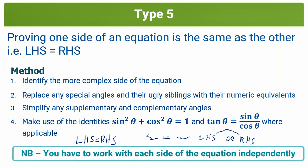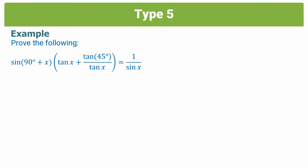To consolidate the method, let's tackle an example. We're asked to prove: sine of (90 plus x) all multiplied by tan x plus tan 45 over tan x equals 1 over sin x. Step one: identify the more complex side — obviously the left-hand side, which is way more complicated than the simple 1 over sin x on the right. It would be very difficult to manipulate 1 over sin x to get it equal to that. So we start with the left-hand side. Step two: we see 45 degrees is a special angle, so tan 45 equals 1. And for step three, we also see a complementary angle.